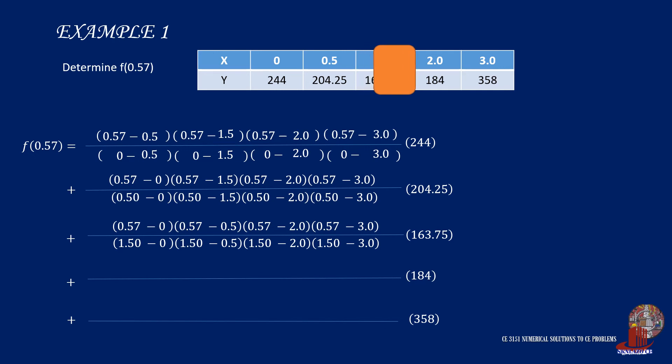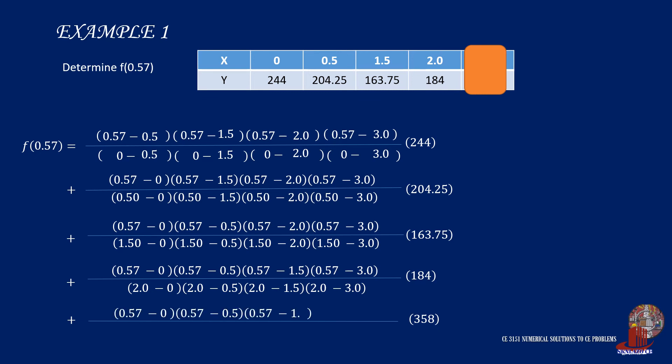Next, we isolate data point 4 and use 2 in the denominator. 0.57 in the numerator will be subtracted by 0, 0.5, 1.5, and 3, and the same values will also be subtracted from 2 in the denominator. The last term will have x1 until x4 as subtrahends in the numerator. x5 will be found in the denominator subtracted by x1 to x4.